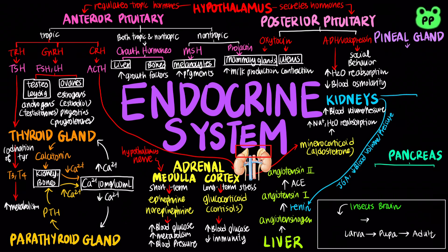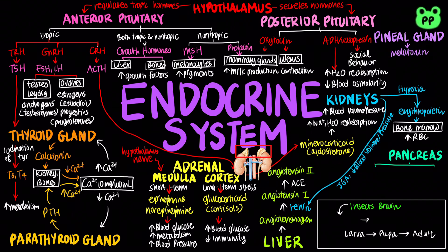During hypoxia, or low oxygen, the kidneys release erythropoietin, which stimulates the bone marrow to produce more red blood cells. The pineal gland secretes melatonin, which regulates circadian rhythm and pigmentation.